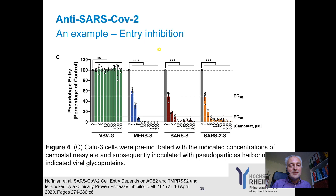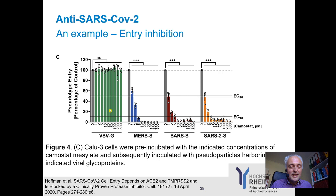Coming back to entry inhibition: from a pharmacological point of view, what matters is to what extent you can block entry. The VSV control virus is not sensitive to these agents. But for MERS, SARS, and the new SARS-CoV-2, Camostat — which inhibits TMPRSS2 — inhibits entry in a lung cell line (Calu cells). Incidentally, those Calu cells came from the lab of Stefan Ludwig, who showed in a Nature Medicine paper that aspirin can block influenza replication by inhibiting NF-κB.